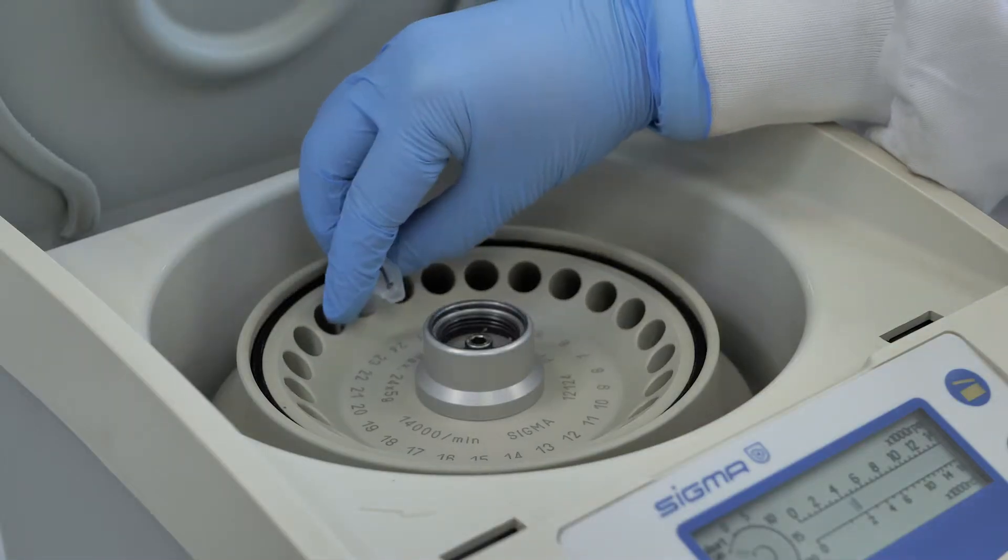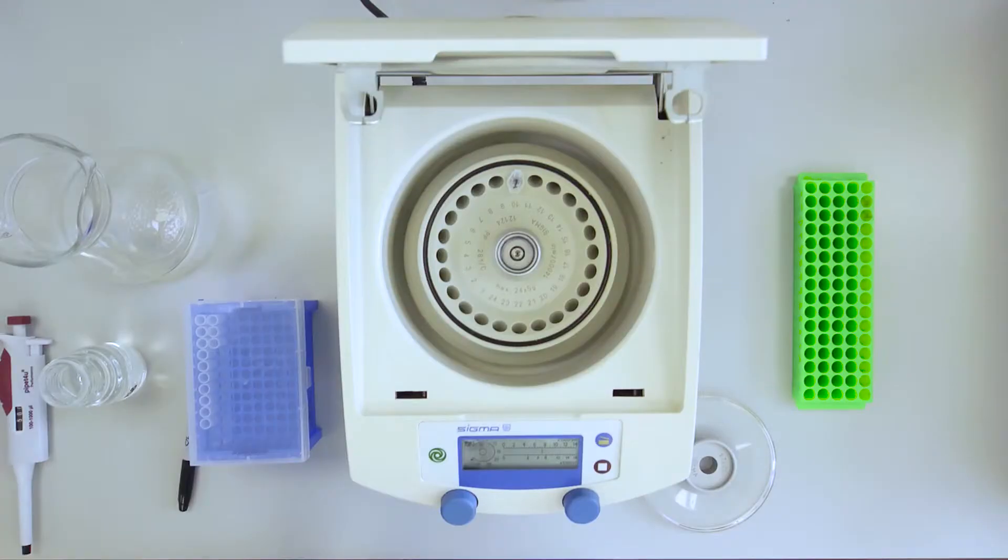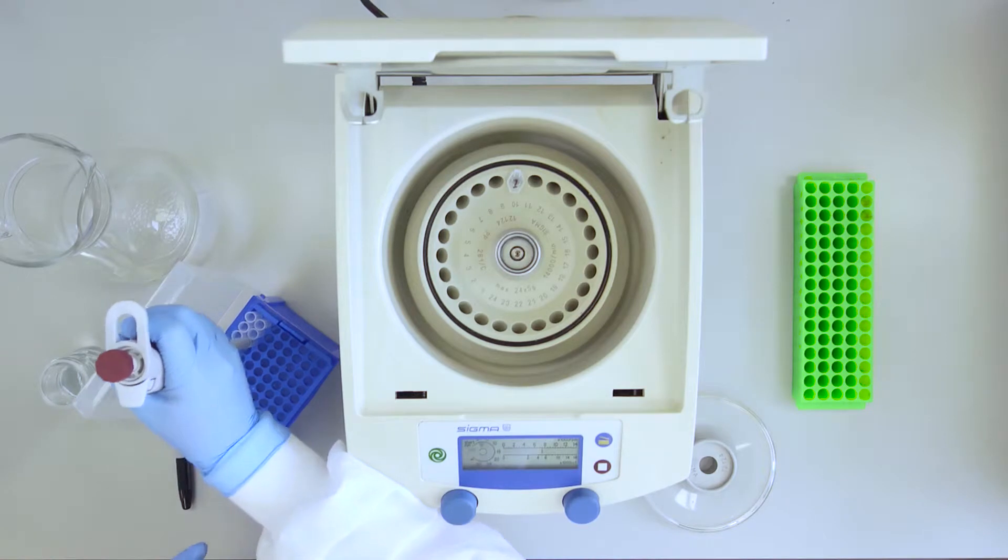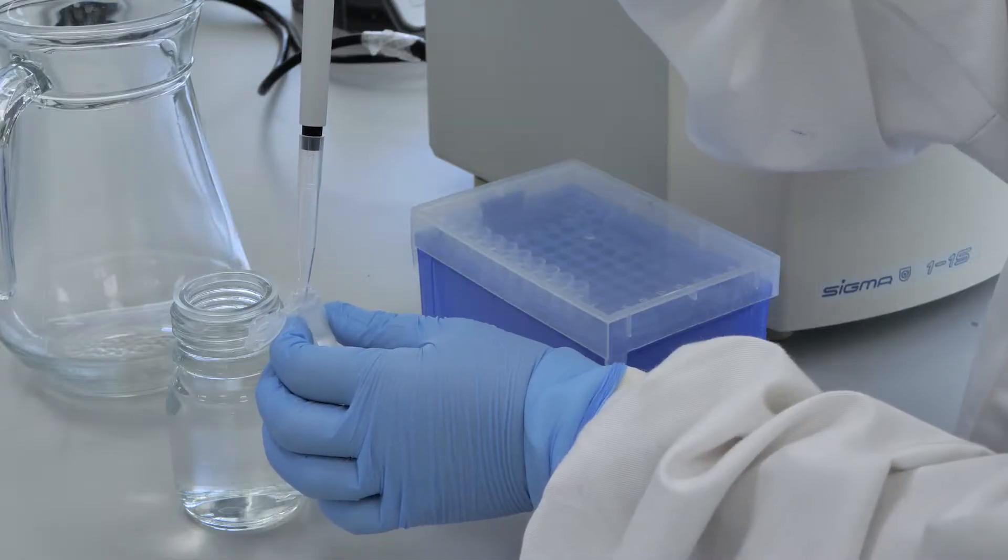If you are only spinning one sample, you will need to make a balanced tube of the same mass to load directly opposite the sample tube to ensure forces on the rotor are balanced while spinning.